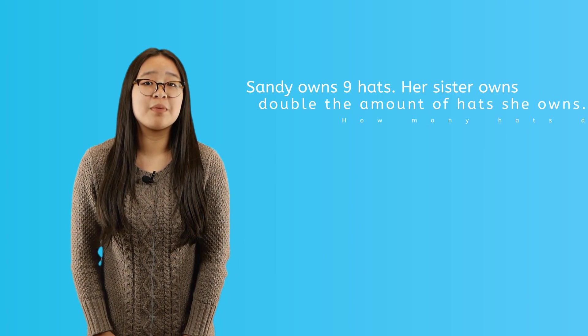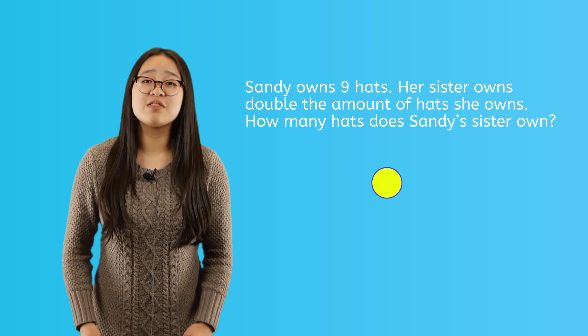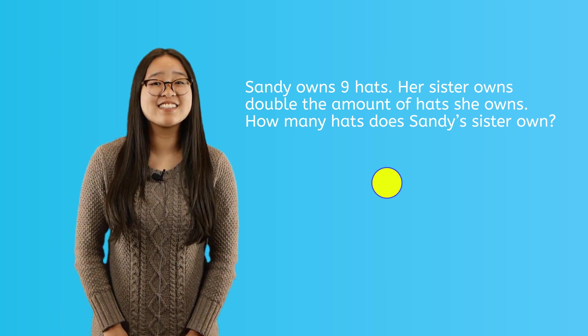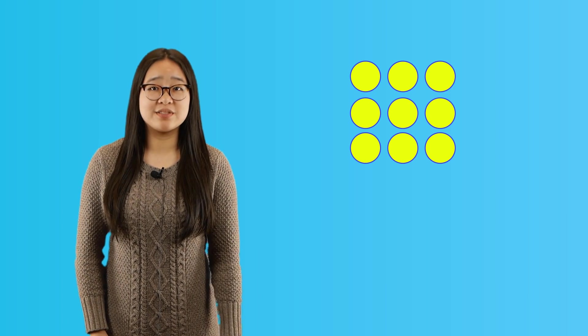In our problem, we may not have many hats, but we can use these tokens to represent or stand in the place of hats. Here is what I mean. If we make each token be a hat, how many tokens will we need to show how many hats Sandy owns?